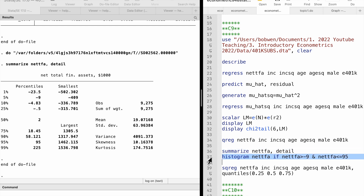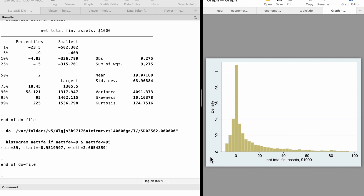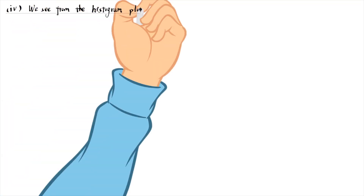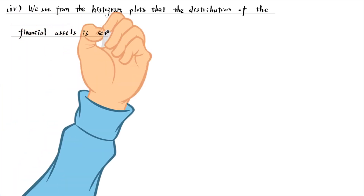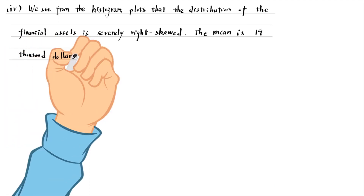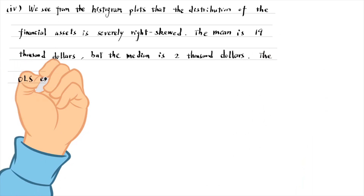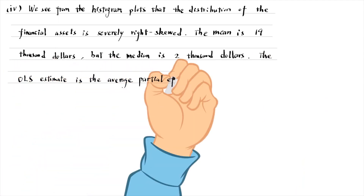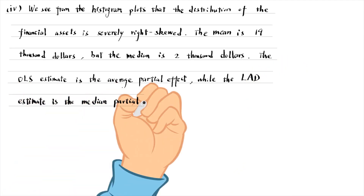For the last part, we see from the histogram plots that the distribution of the financial assets is severely right-skewed. The sample mean is $19,000, but the median is $2,000. The OLS estimate is the average partial effect, while the LAD estimate is the median partial effect.